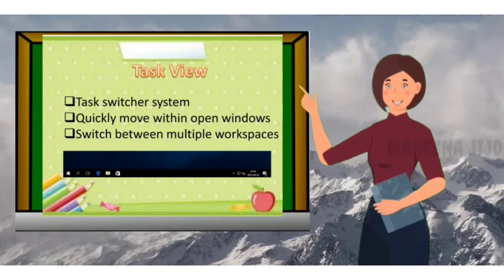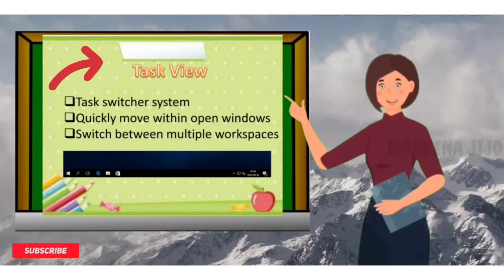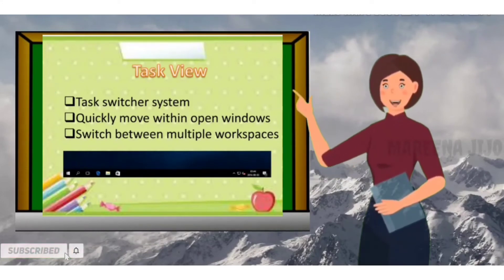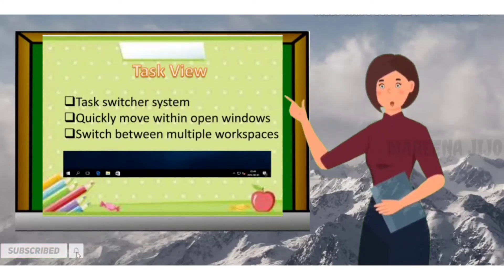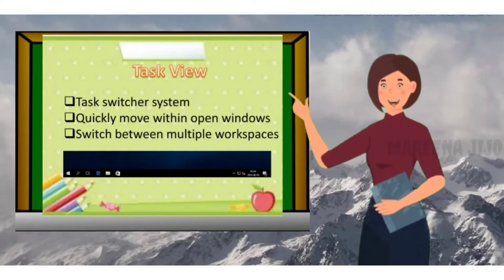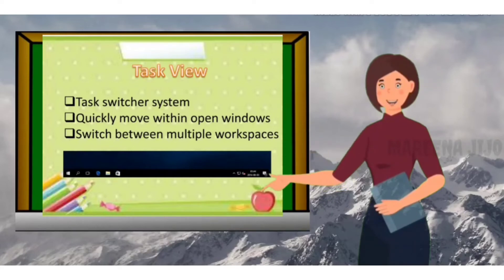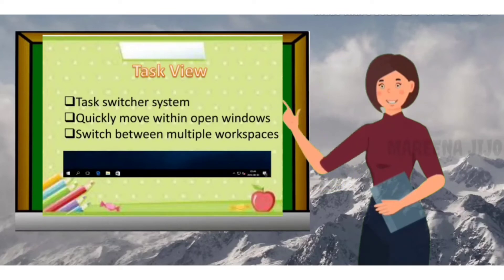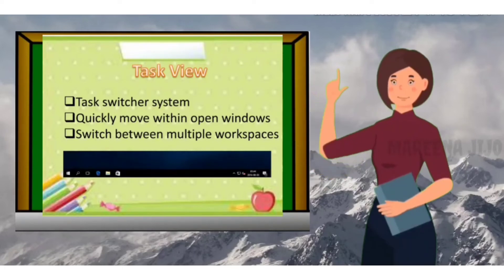Task View is a task switcher system introduced in Windows 10. It allows you to quickly move within your open windows and applications. Clicking the Task View button on the taskbar displays all open windows and allows users to switch between them or switch between multiple workspaces.